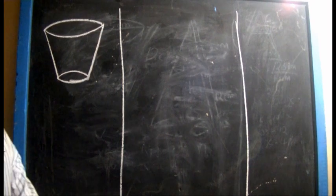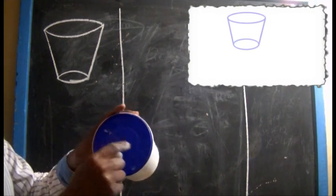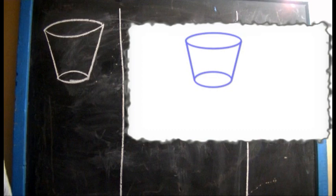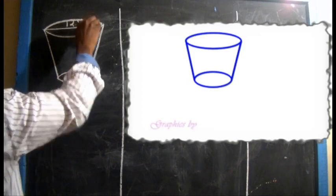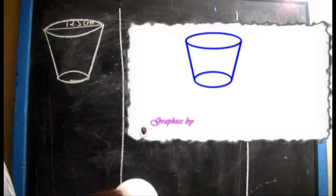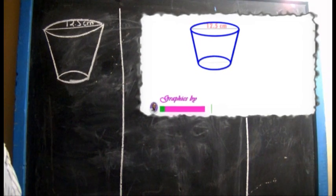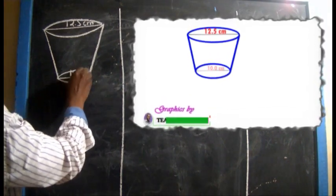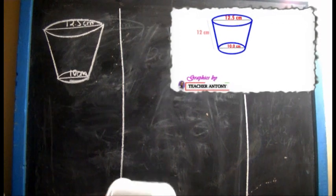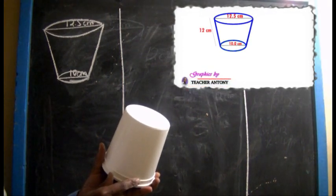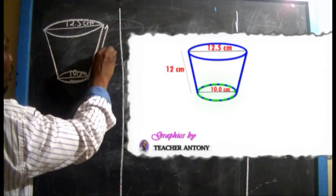I already did some measurements and found that the big circle has a diameter of 12.5 centimeters. The smaller circle has a diameter of 10 centimeters. And then the slant height for this frustum is 12 centimeters — so from here to there is 12 centimeters.